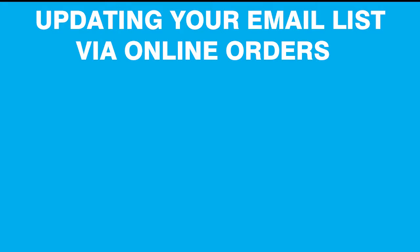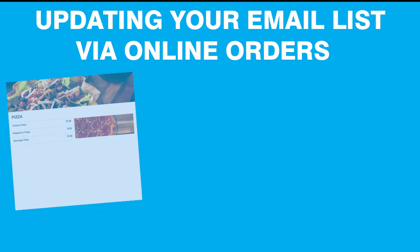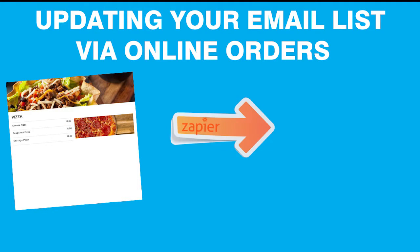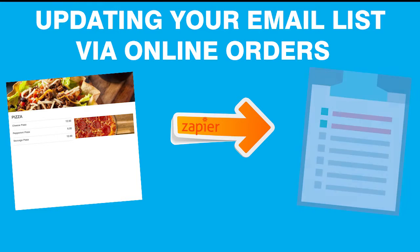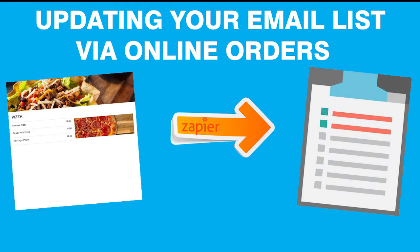Here's how it works. When someone places an order in your Let's Buy Local online ordering system, it will trigger an event in Zapier that will automatically update your mail list in MailChimp or any other email service that integrates with Zapier. Zapier is essentially the middleman that connects Let's Buy Local and your email list together. Once a customer places an order, it'll take their email and add it to your email list.